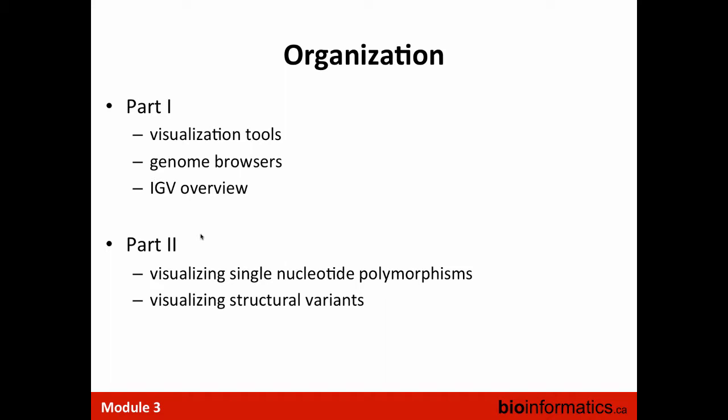The talk is organized in two parts. In the first part, we're going to discuss a couple of visualization tools and specifically genome browsers, and we'll have an overview of IGV. In the second part, we're going to talk in more detail about single nucleotide polymorphisms and structural variants. There are lots of other things you can do with IGV — you can look at splicing information if you have RNA-seq data. I encourage you to look up the IGV tutorial from the Broad, which has 200 slides on basically everything you can do with IGV.